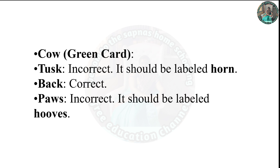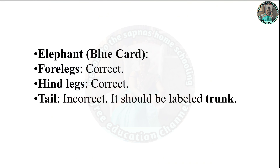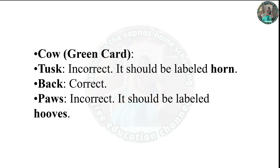The second picture is called a horse. It should be labeled as horn. Back is incorrect. Paws is incorrect — it should be labeled as hooves.